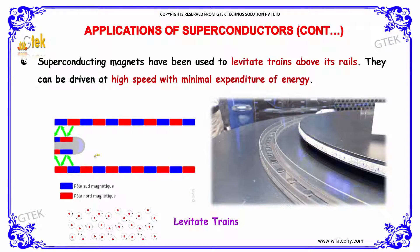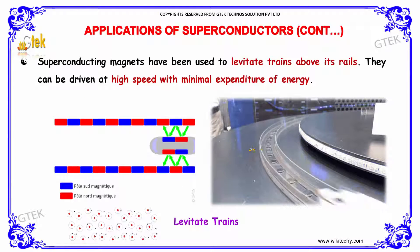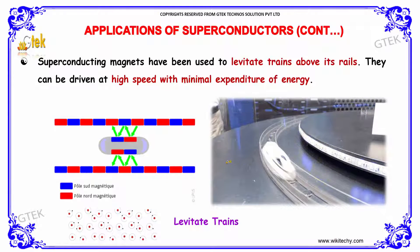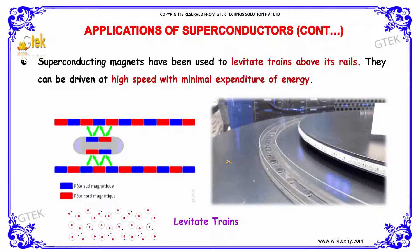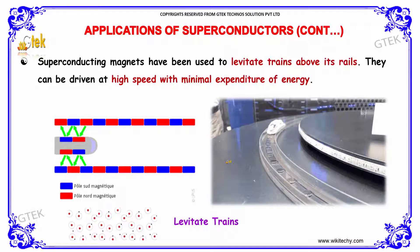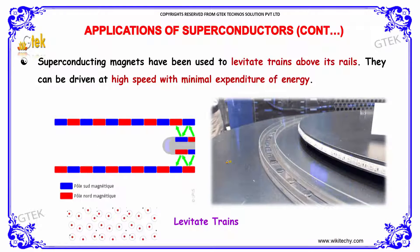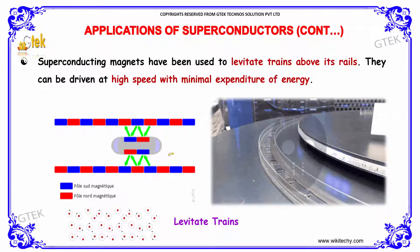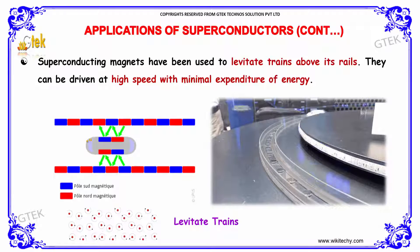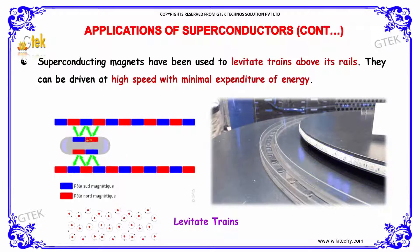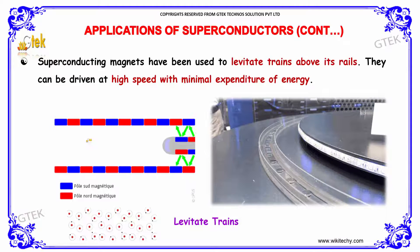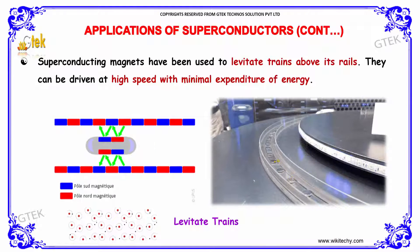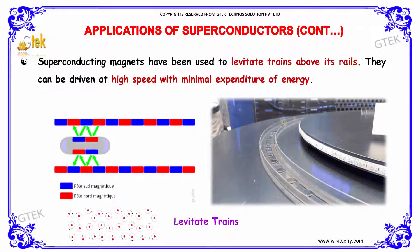Superconducting magnets have been used to levitate the trains above tracks. They can be driven at a very high speed with minimal expenditure of energy. You are able to see the levitating trains, and you can see in the bottom the conductors.